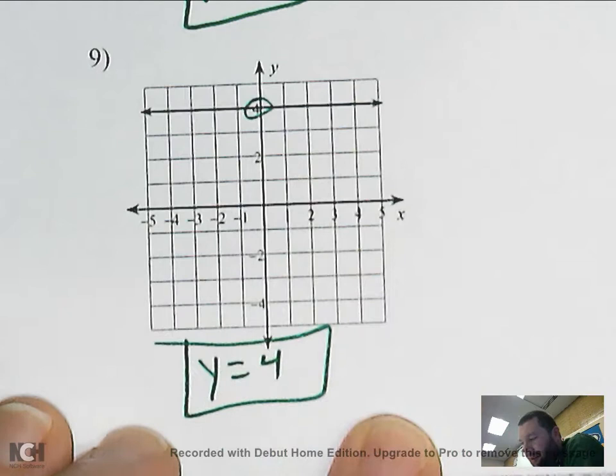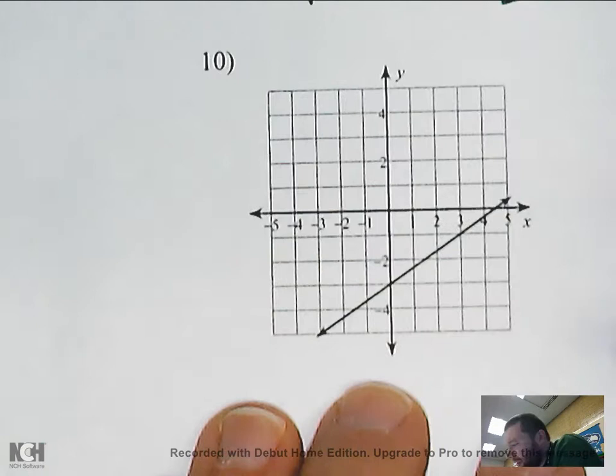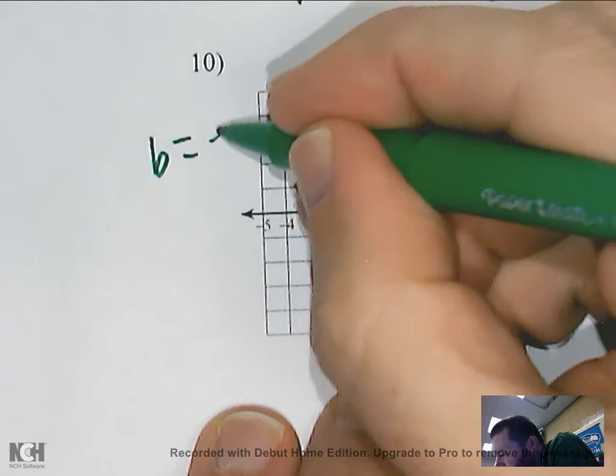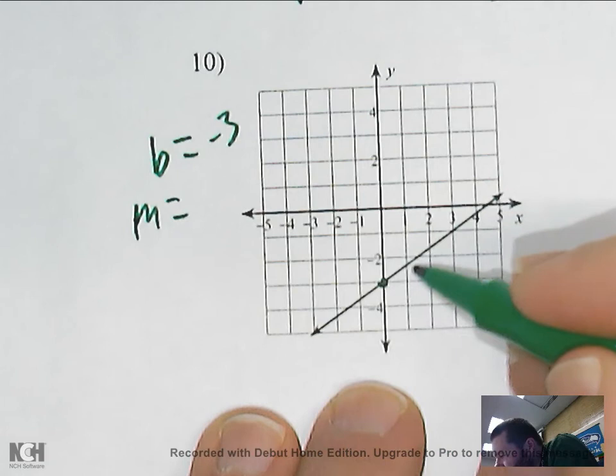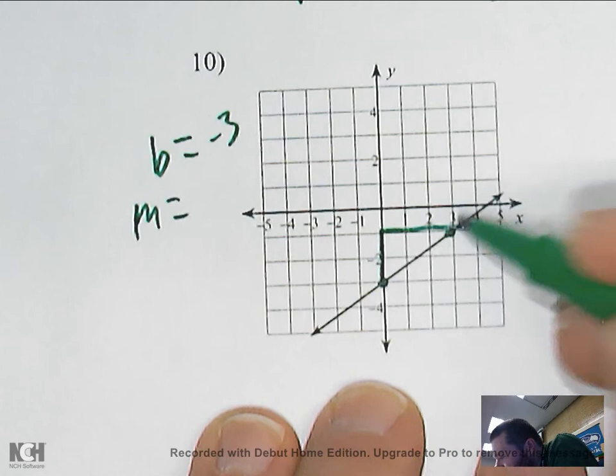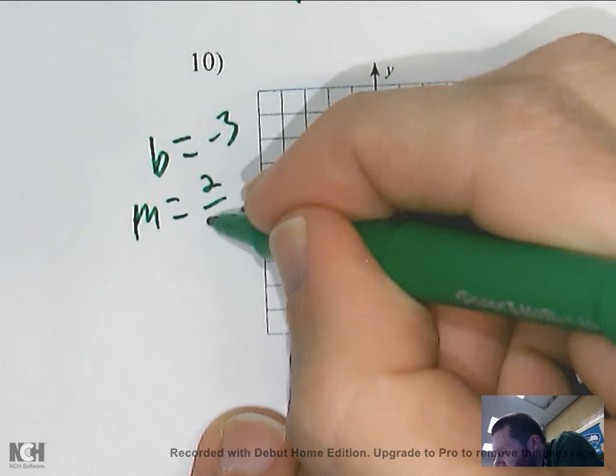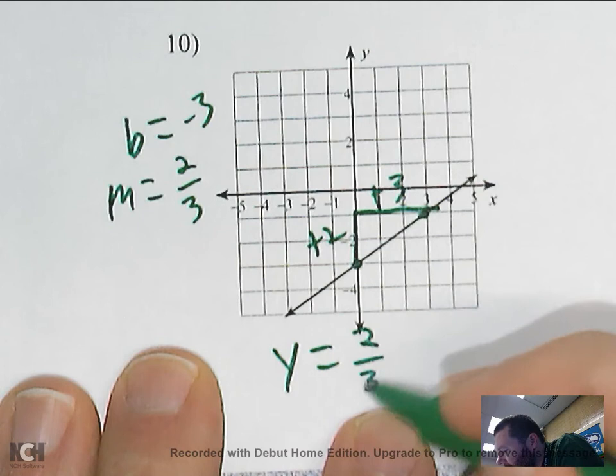This last one — the y-intercept is going to be negative three. Our slope is going up two and over three, so my slope would be two over three. My equation would be y equals two over three x minus three.